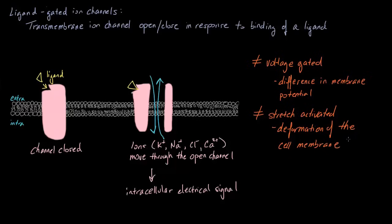So in summary, ligand-gated ion channels are one type of membrane receptors. They are transmembrane ion channels that open or close in response to the binding of a chemical signal like a ligand. You'll notice that here our channel is closed, and once this ligand binds to an allosteric site, which is a site that's not on the channel itself, it'll let ions such as potassium and sodium and so on move through the membrane. This will actually cause an intracellular electrical signal.